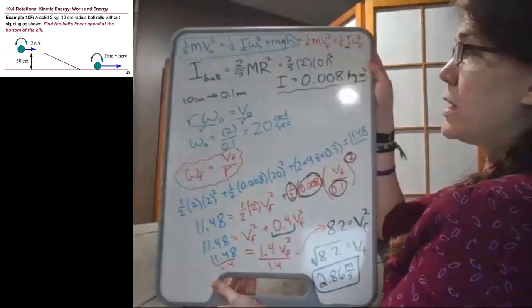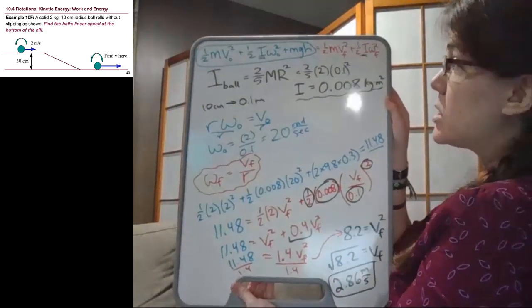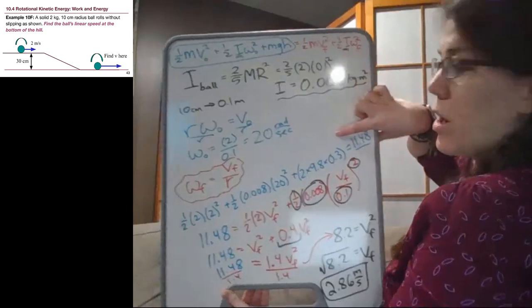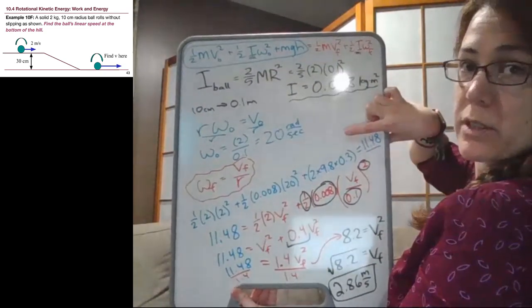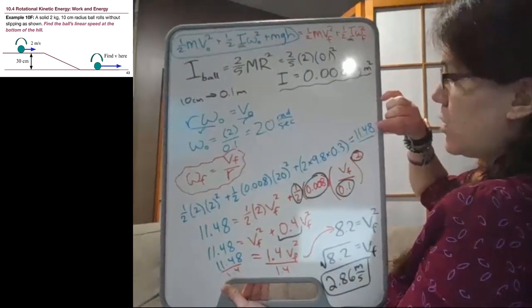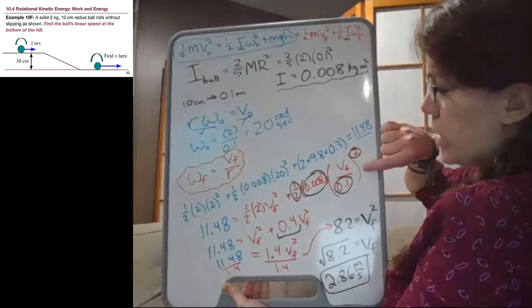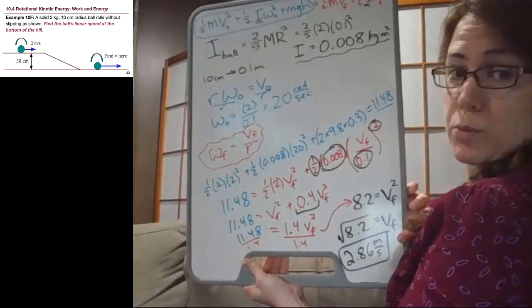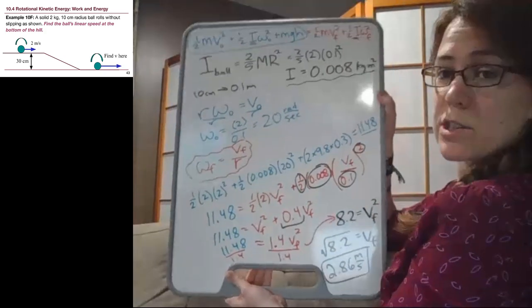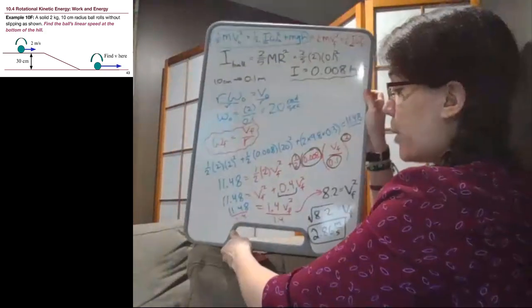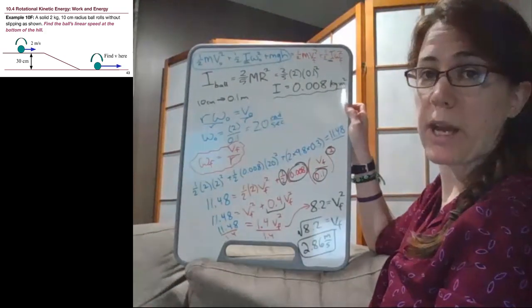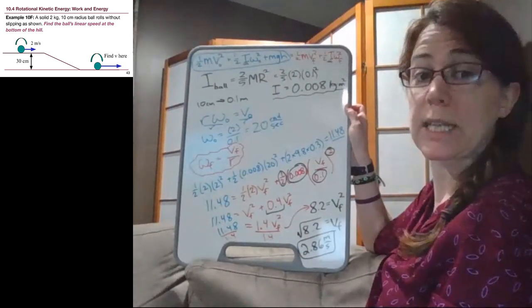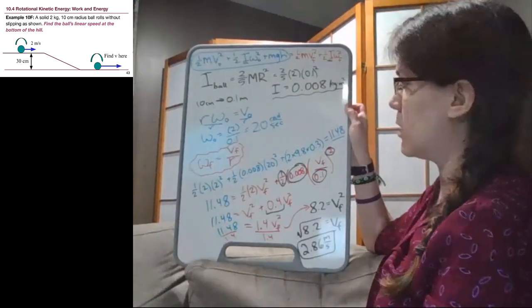We see that this full whiteboard worth of stuff is the math part, and these pieces were the extra bits of physics we had to think about from chapter 10. Our last check to see if things make sense: that ball rolled downhill, so we needed to expect a speed faster than what it was at the top. Since 2.86 meters per second is bigger than 2 meters per second, that satisfies our simple check.